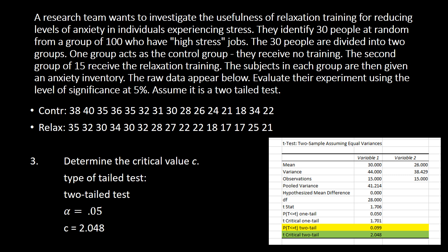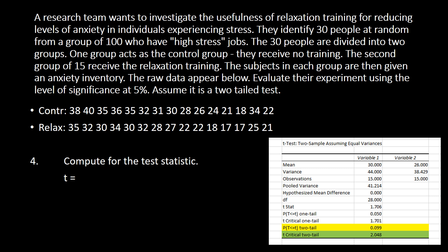Now that we have the results, we continue the process. The critical value is 2.048 based on the two-tailed test. Since this is a two-tailed test, we must include both signs, so the critical value is ±2.048, meaning positive 2.048 or negative 2.048. For our test statistic, looking at the table of values, we get the t-statistic which is 1.706.